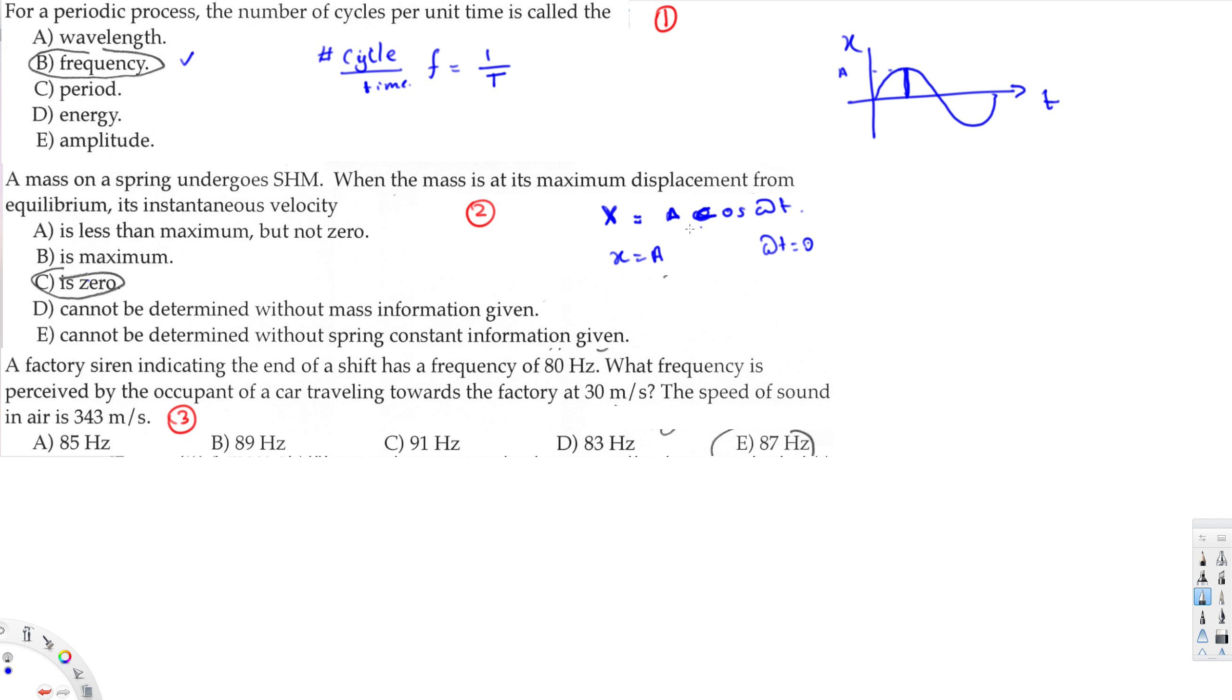The velocity equation is simply the derivative of this equation. So let's find the derivative of this equation. The velocity equation is going to be the derivative, so that derivative is minus A omega sine omega t, right?